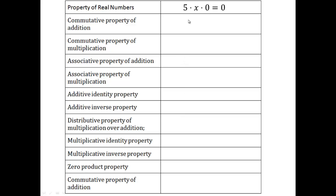We'll put an equation and you check which property is being used. Something times zero is zero — that's the zero product property. Next: 1 half times 2 is 1. What property is that? 2 and 1 half are multiplicative inverses of each other, which is why you end up with 1.